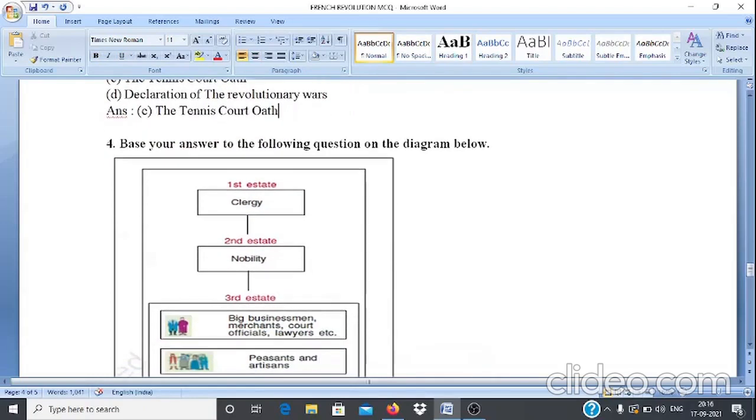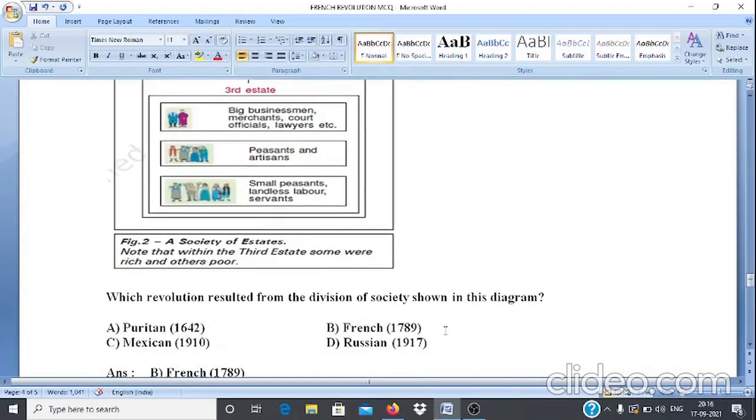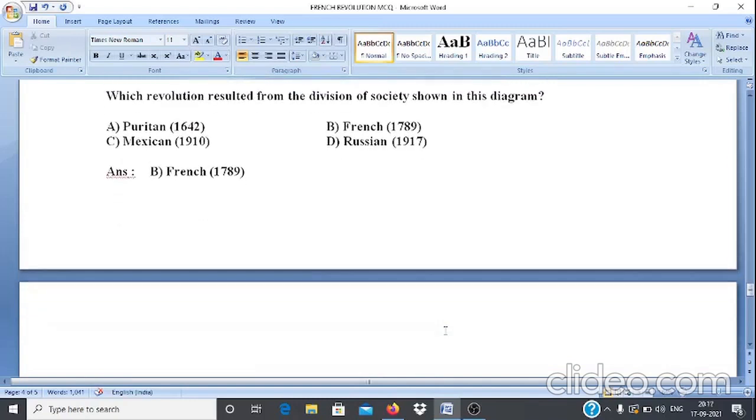And question number 4. Base your answer to the following question on the diagram below. Look at the diagram carefully. After the diagram, look at the question: Which revolution resulted from the division of society shown in this diagram? Option A: Persian 1642, B: French 1789. Answer is option B, that is French Revolution 1789.